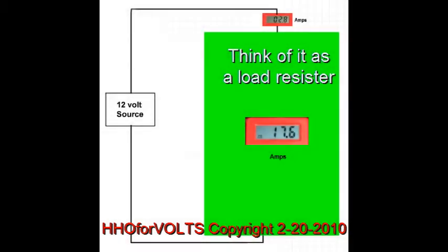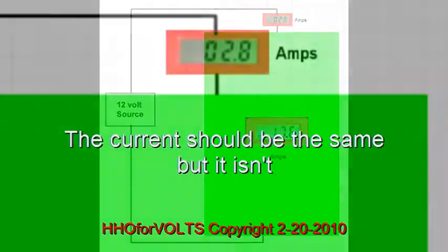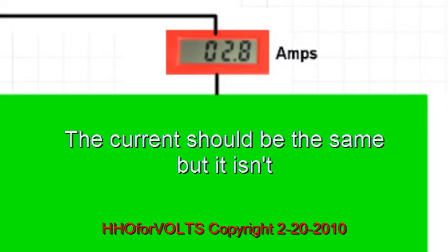Here is a very simplified circuit showing it as a load resistor across the 12-volt supply drawing 2.8 amps. The current should be the same throughout this series circuit, but it is not in part of the rod circuit.